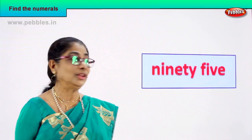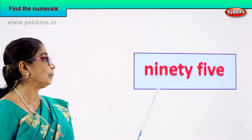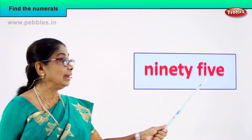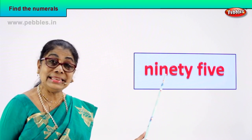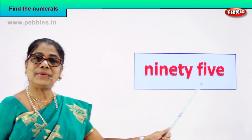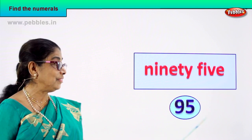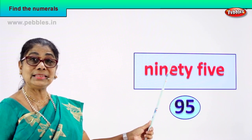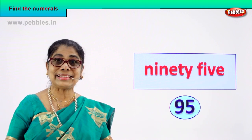Look at the first number name — spell and say. N-I-N-E-T-Y is ninety, F-I-V-E is five. How do we read this? 95. So what will be the numeral? 95 is written as 9 and 5 — 95. Excellent! You read this as 95. How do you spell 95? 9 and 5, 95. Excellent!